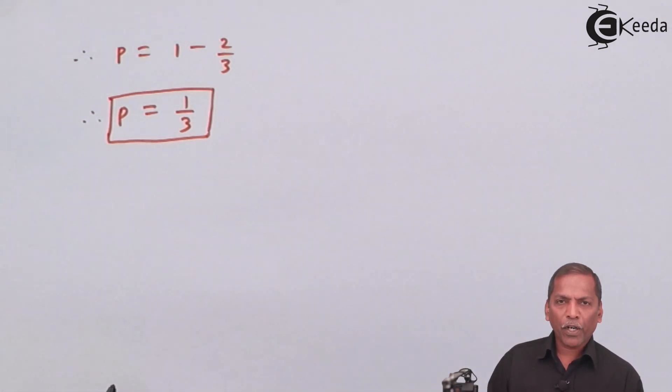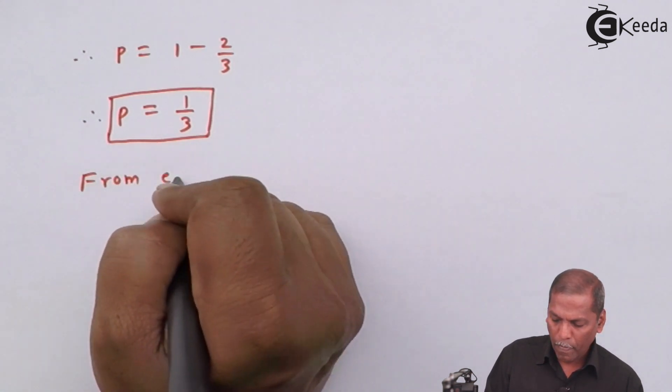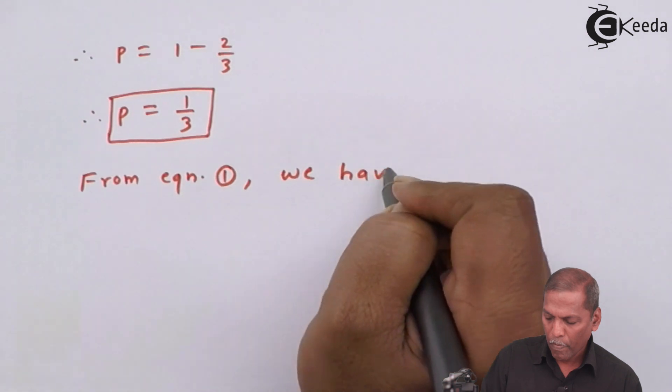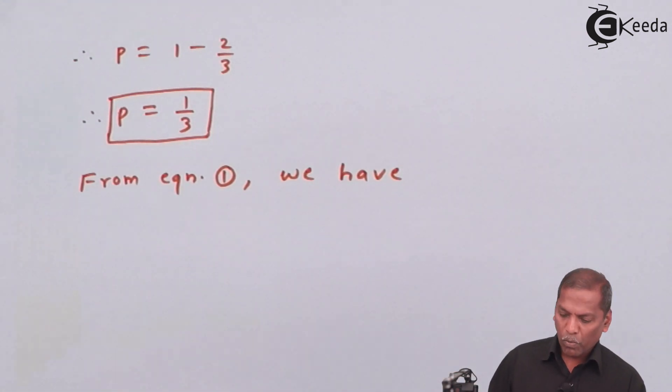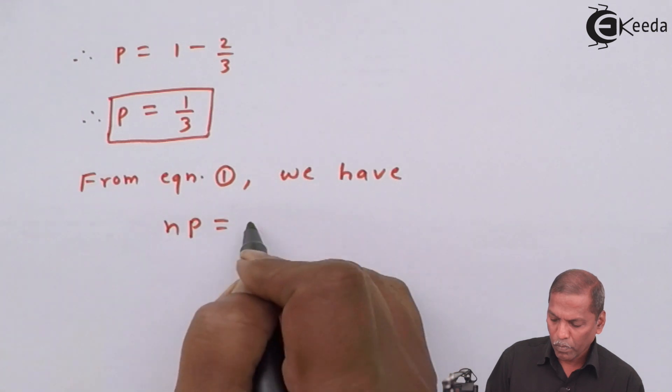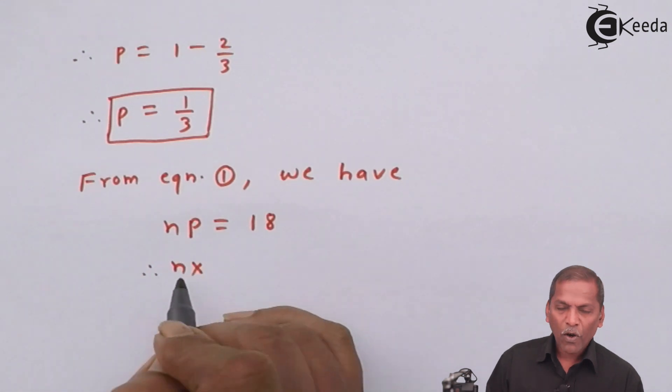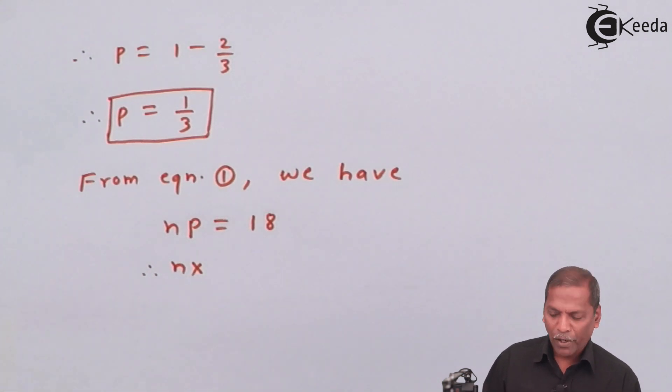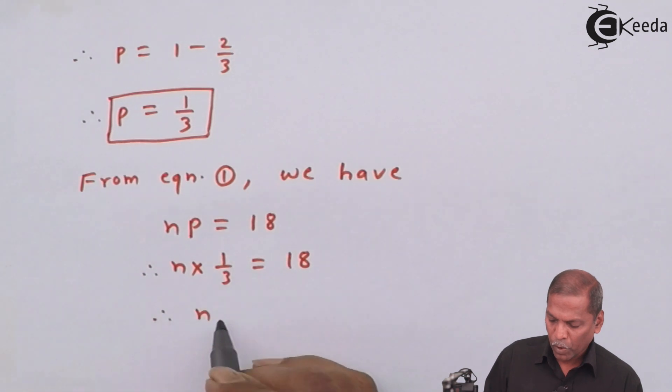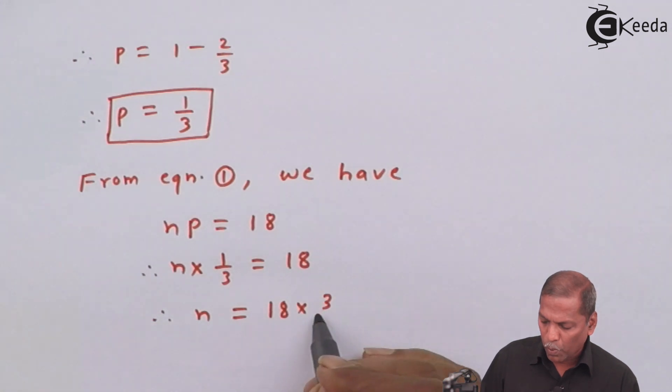Now, for equation 1 we have np is equal to 18. Therefore, n into, for p we substitute value 1 by 3. So is equal to 18. So n is equal to 18 into 3 by 1.